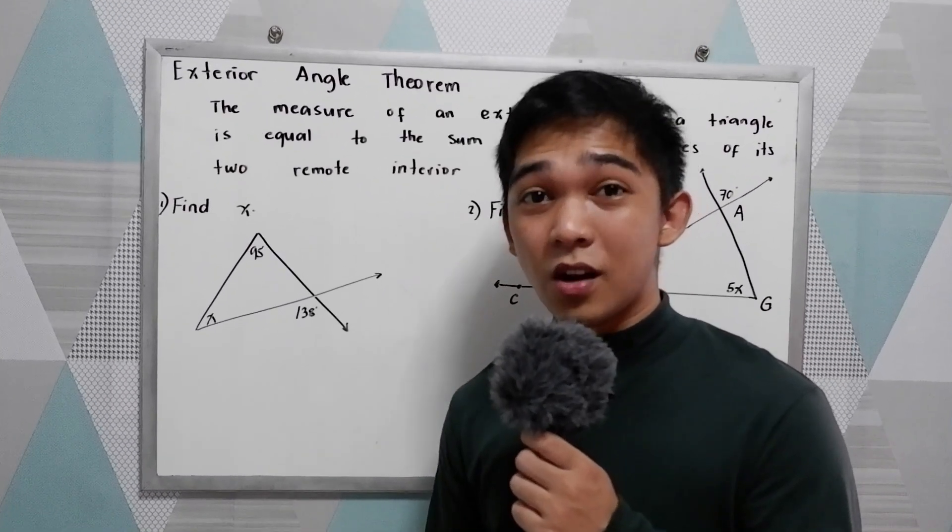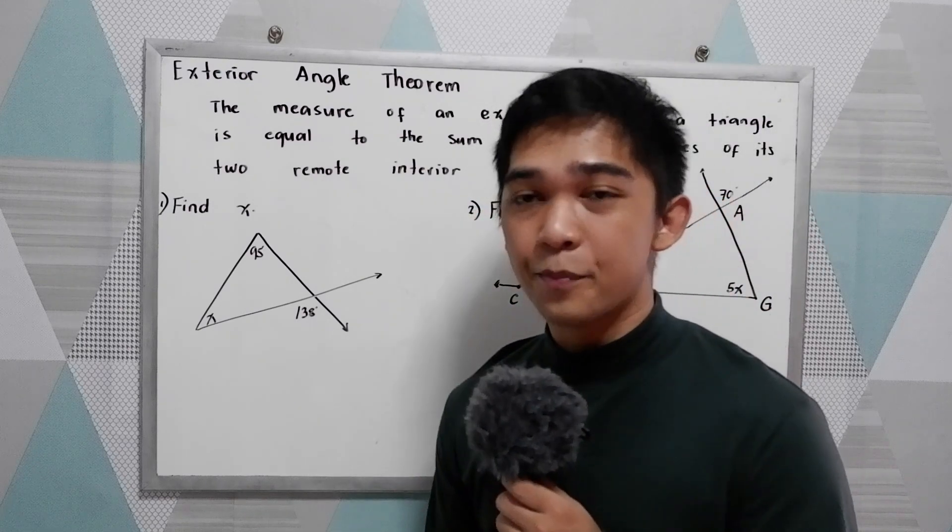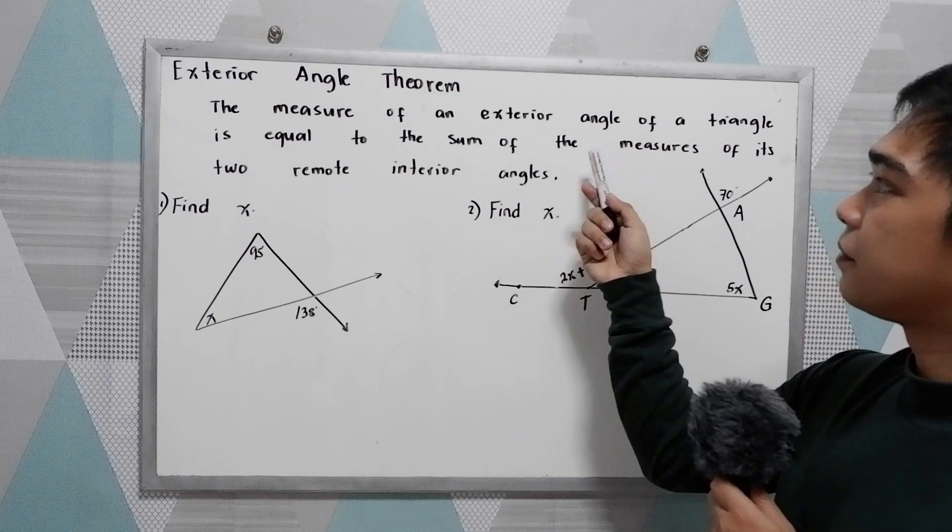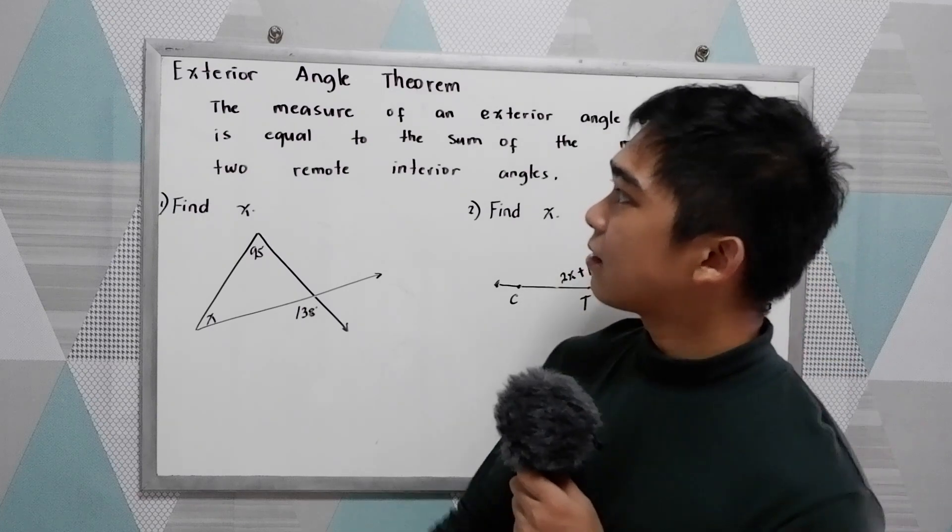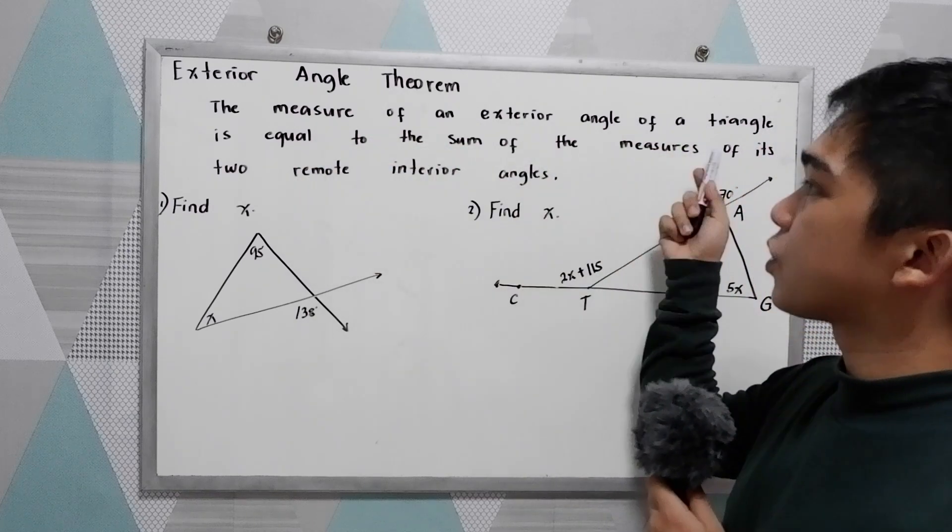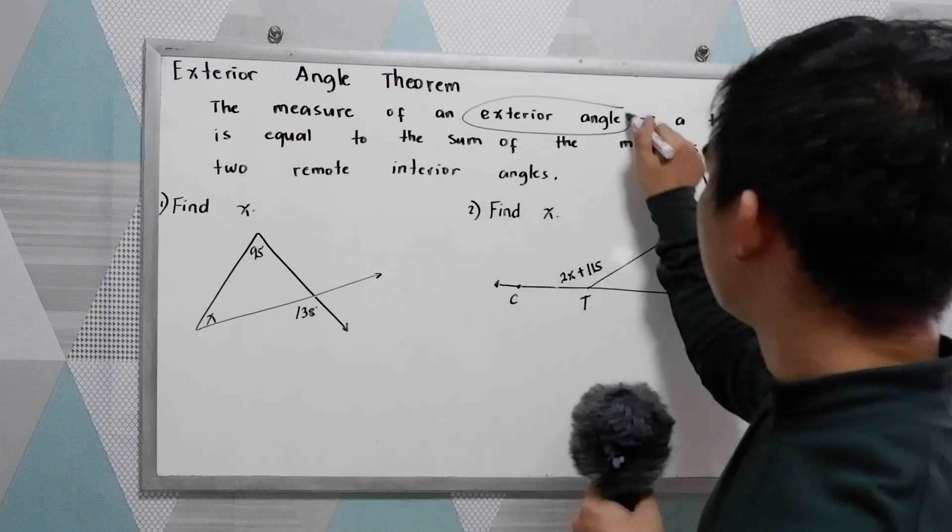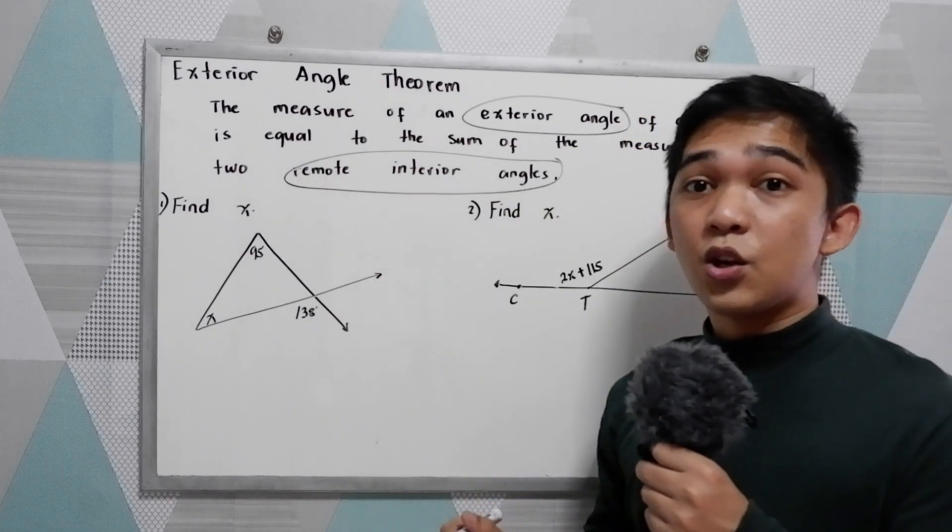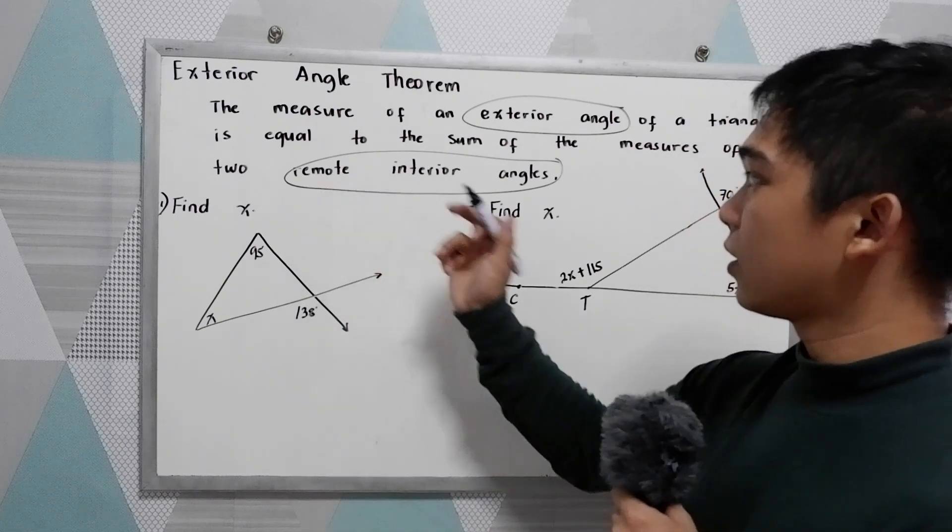You will also encounter the exterior angle theorem. The theorem states that the measure of an exterior angle of a triangle is equal to the sum of the measures of its two remote interior angles. So we have here exterior angle and the two remote interior angles. In order for you to get the exterior angle, there must be two given angles which are remote interior angles.